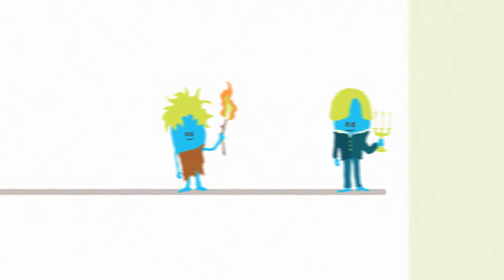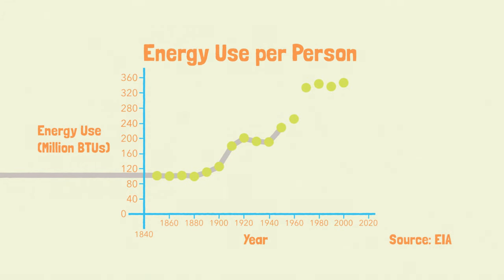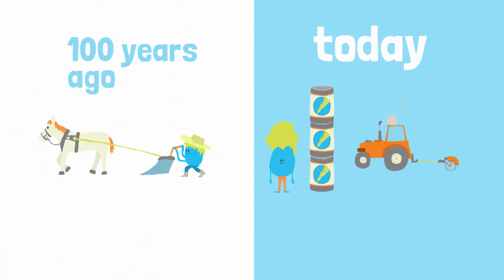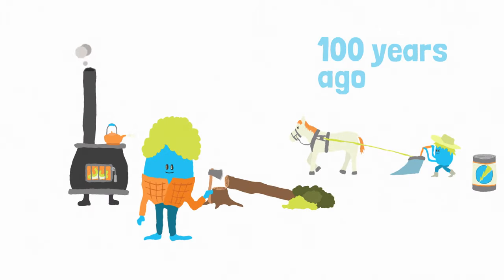For most of human history, our energy use was pretty flat. But in the past century, it skyrocketed. In the U.S., you use three times as much energy as your great-grandmother did 100 years ago, when they used more wood than oil.